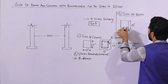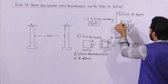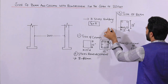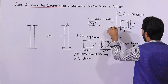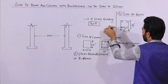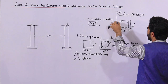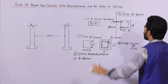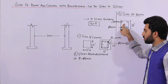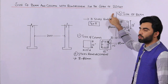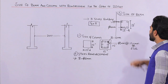For steel reinforcement in the beam, use four steel rods at the bottom and two at the top. The bottom steel reinforcement diameter should not be less than 16 mm, and the upper portion diameter should not be less than 12 mm. This design is for a span up to 20 feet with up to three floors or G plus 2.